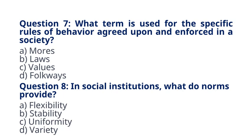Question 8. In social institutions, what do norms provide? A. Flexibility. B. Stability. C. Uniformity. D. Variety. The correct answer to question 8 is option B, Stability. Explanation: Norms provide stability within social institutions by establishing consistent patterns of behavior.